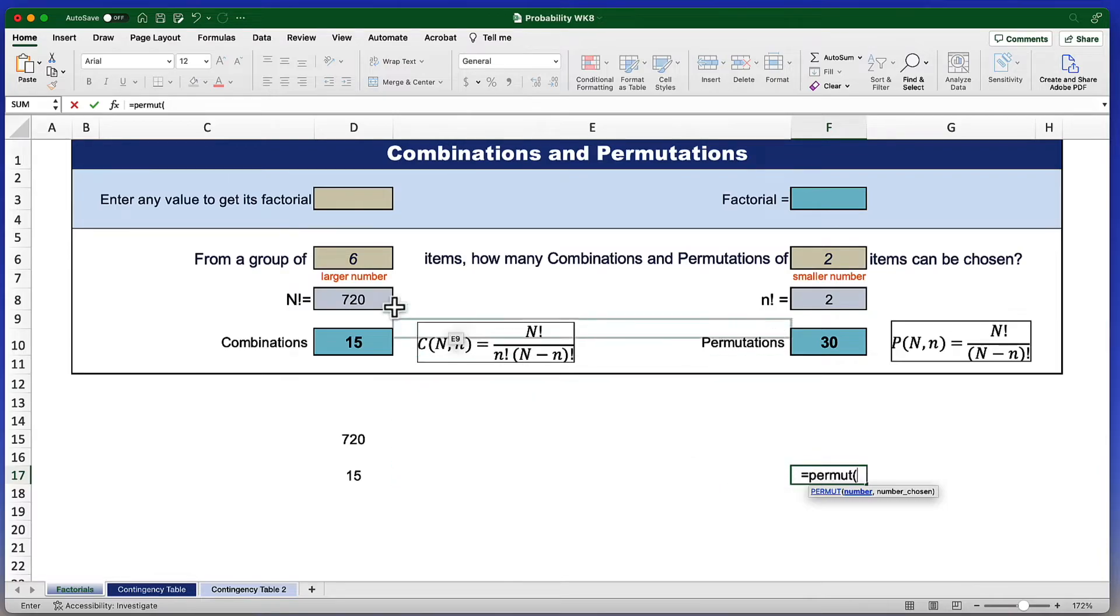and again the larger number, comma, and the smaller number. No need to add the closed parentheses. That's done for us automatically. And of course Excel will change my lowercase typing into uppercase, giving me a properly formatted formula for Microsoft Excel.